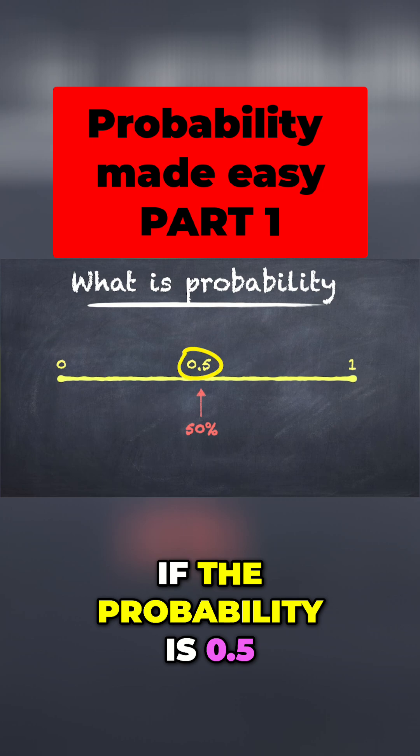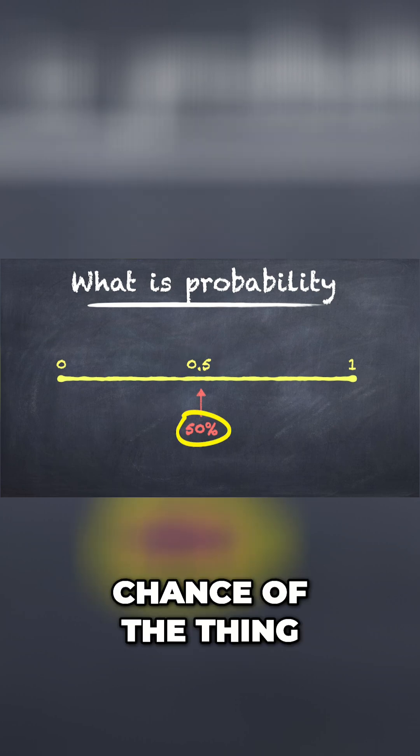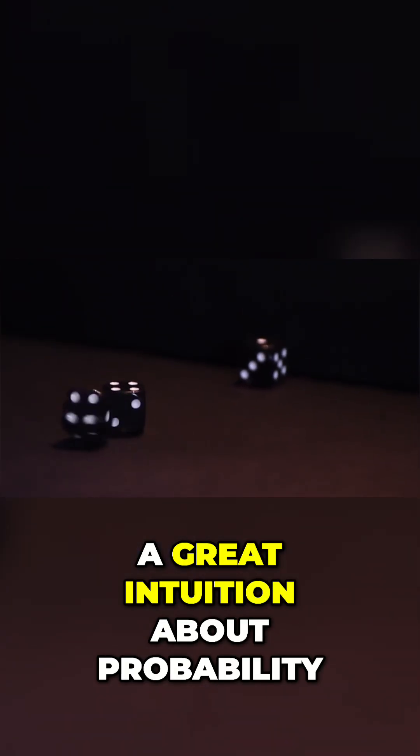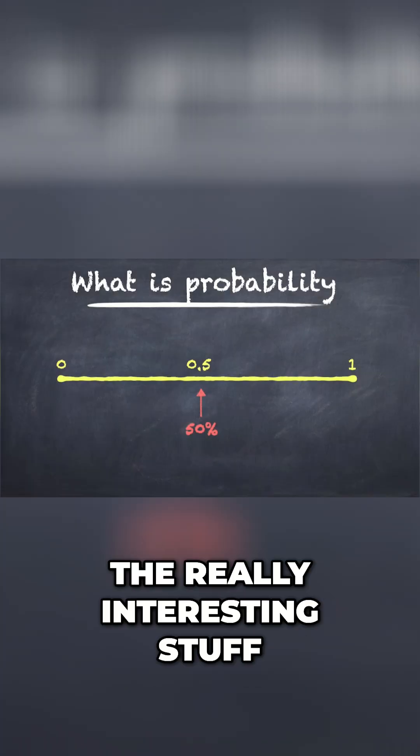So if the probability is 0.5, then there's a 50% chance of the thing of interest happening. Let me quickly prove to you that you already have a great intuition about probability, and then we're going to jump into the really interesting stuff.